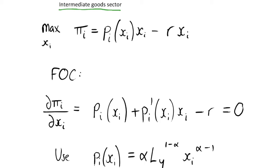So what do we mean by the intermediate goods sector? We have a number of firms which have got monopoly power over some capital good which we'll call X_i. We have lots of these intermediate goods or capital goods X_i which can be sold by the monopolists at price P_i. They have monopoly power because these firms have a patent on the good — they buy this patent from the research and development sector, which we will cover in the next video.